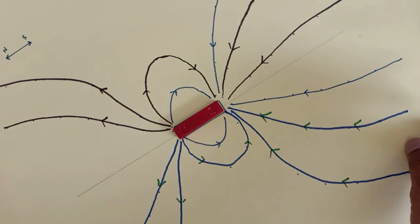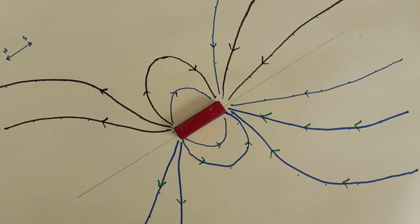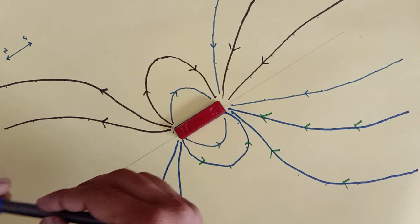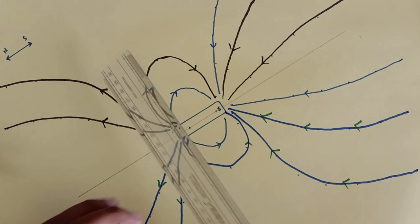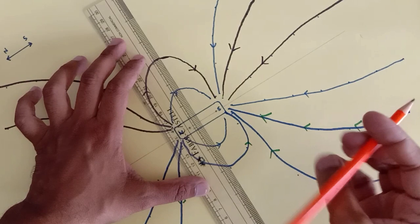Now we have drawn enough of the magnetic field lines. Let's go for the neutral points. First of all, let me remove this bar magnet and take a scale. At the midpoint, I'm going to make a perpendicular line passing from the midpoint of my bar magnet.